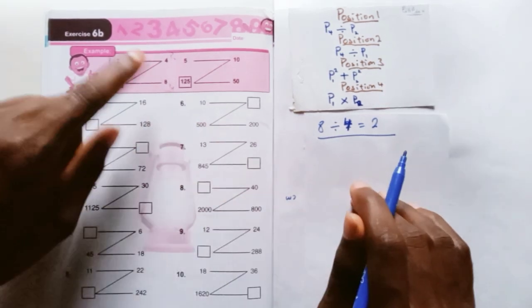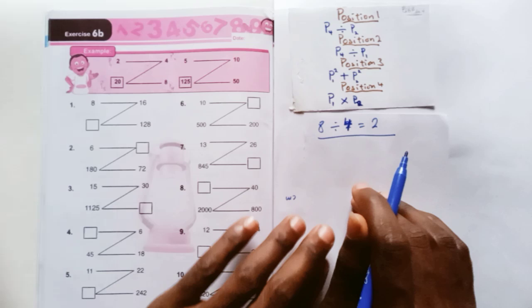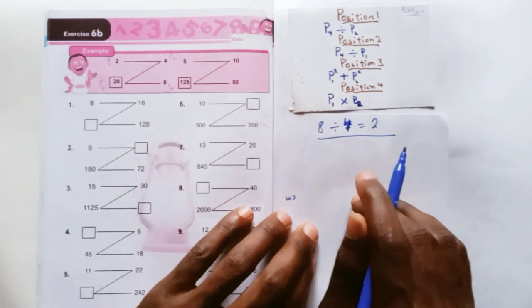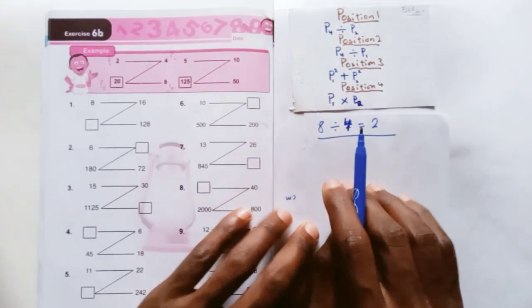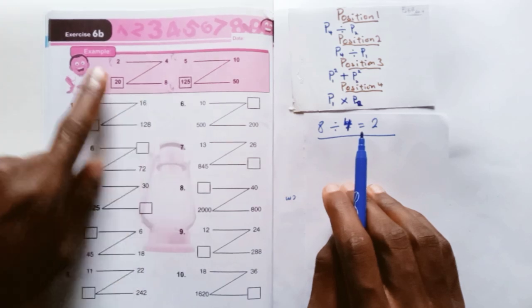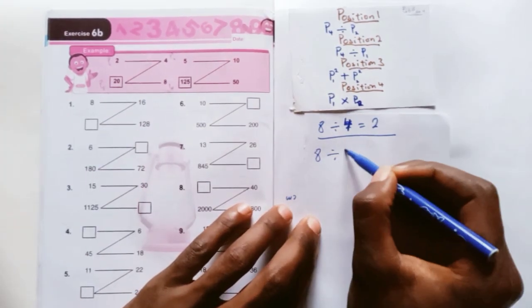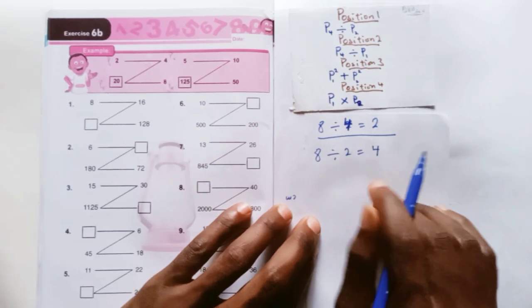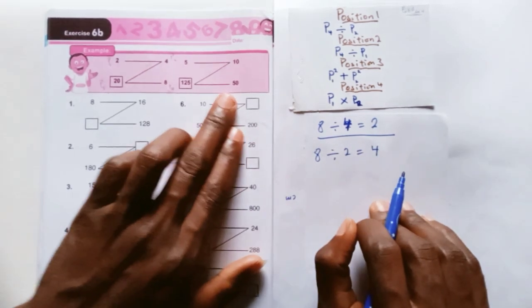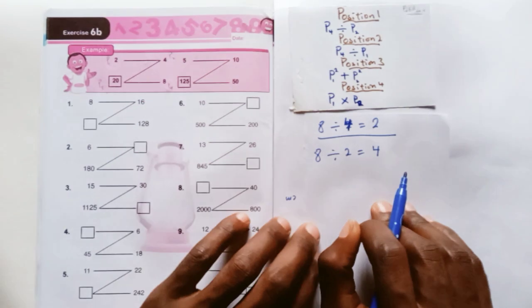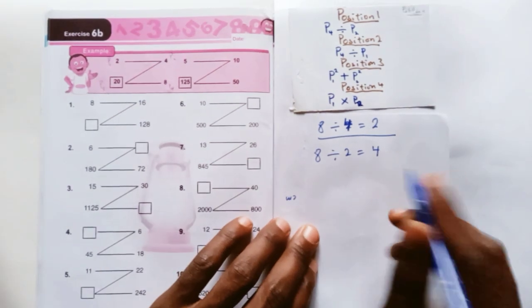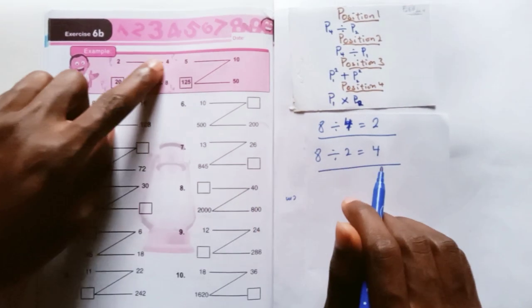To get position 2, that's a 4 here. How do we get the 4 there? We're going to say P4 divided by P1. So 8 divided by 2 is 4. Same thing, 50 divided by 5 is 10. That is how we get the second position there.